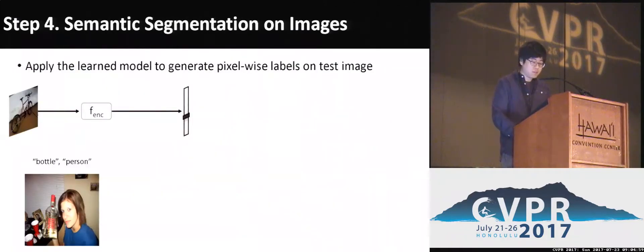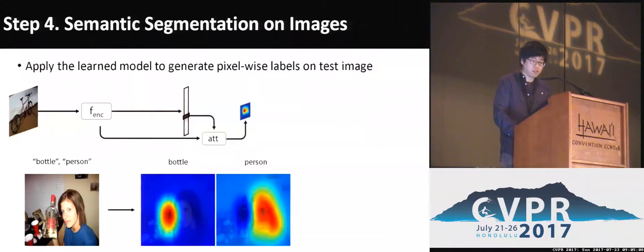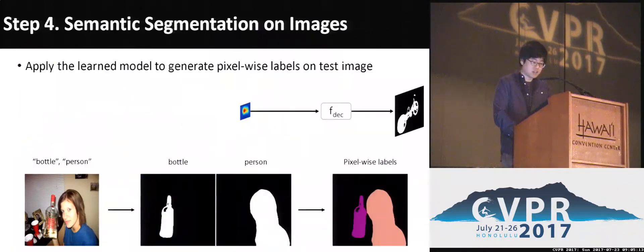After training, semantic segmentation on test images is performed by applying the entire model. Given a new image, we first identify a set of class labels relevant to the input image. Then we compute the attention for each identified class. The decoder is applied on each attention map to compute the binary segmentation mask. Final pixel-wise labels are then obtained by taking pixel-wise maximums of the decoder outputs.